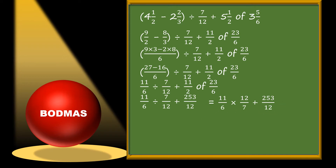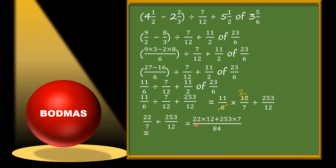Now we solve this multiplication: 6 and 12 cancel — 6 ones are 6 and 6 twos are 12 — so we get 11×2 = 22 by 7, plus 253/12 as it is. Now only addition is left, with denominators 7 and 12. The LCM of 7 and 12 is 84. So we get (22×12 + 253×7) / 84 = (264 + 1771) / 84.